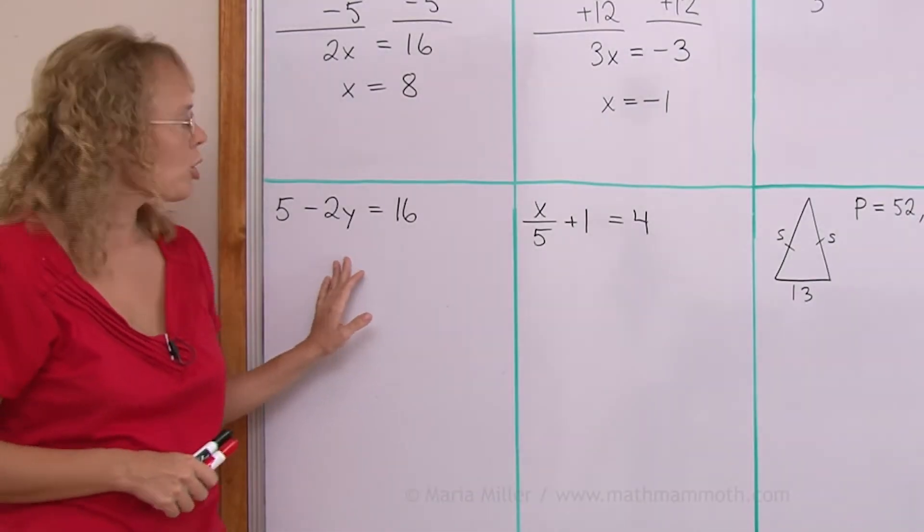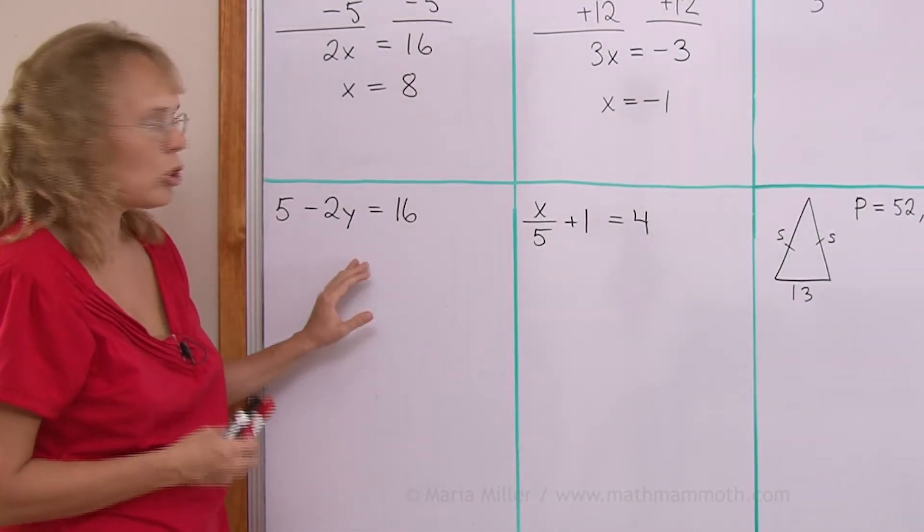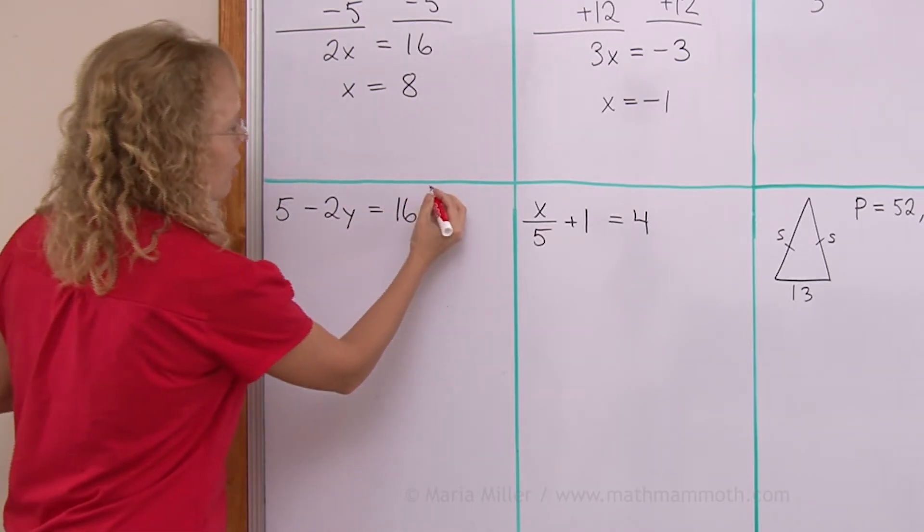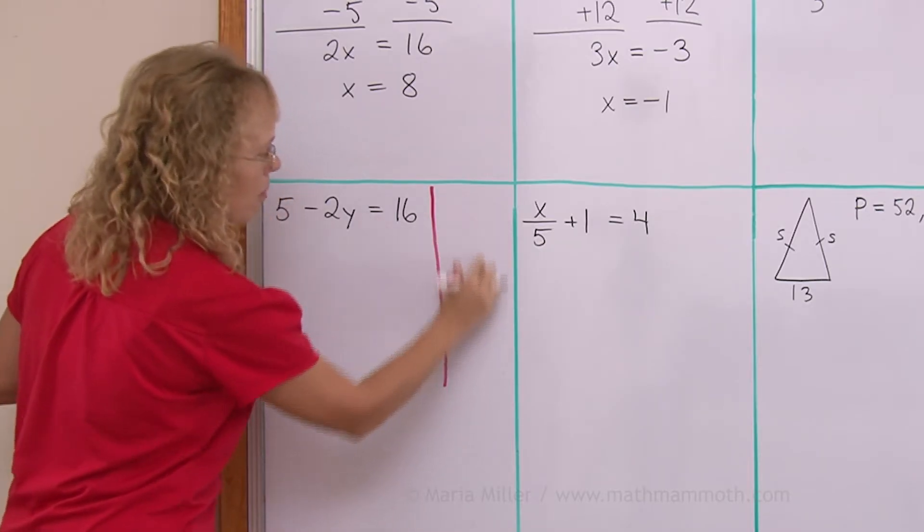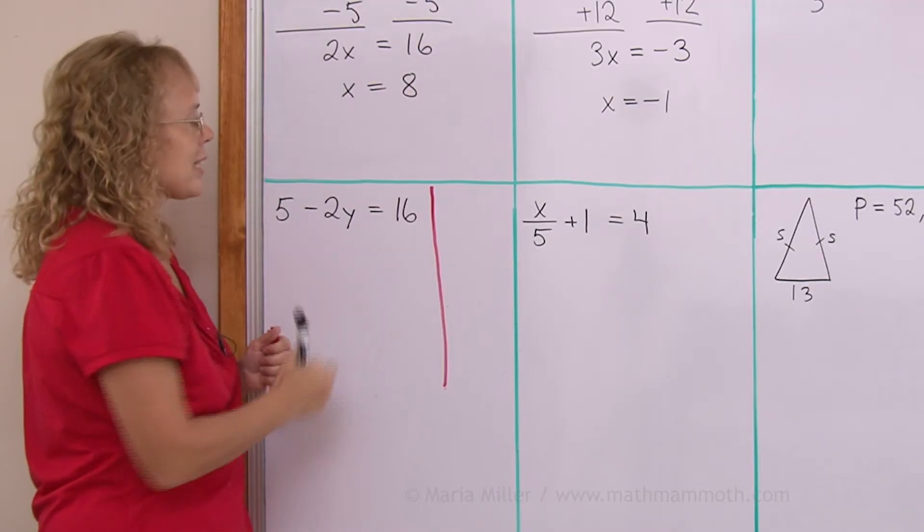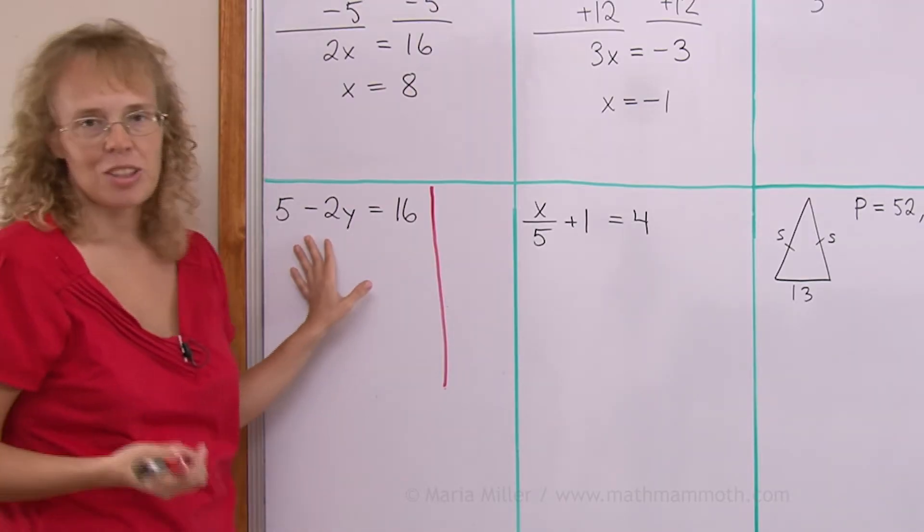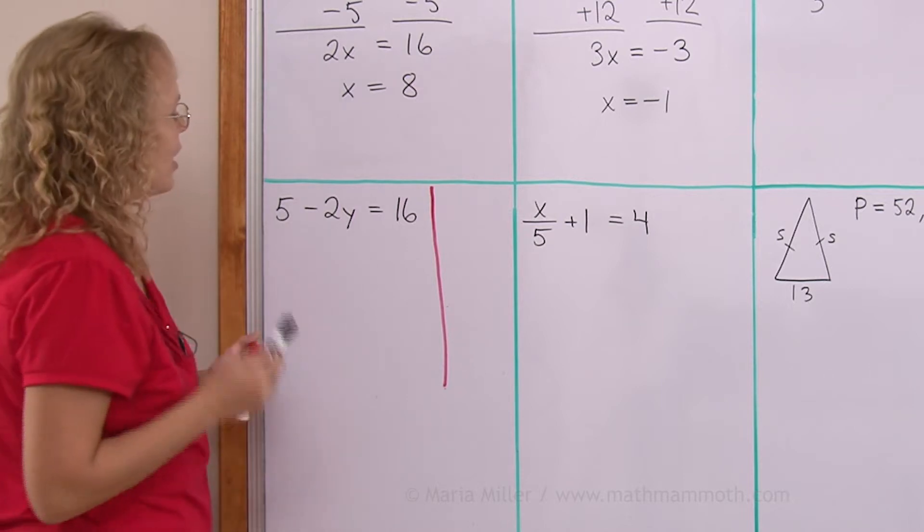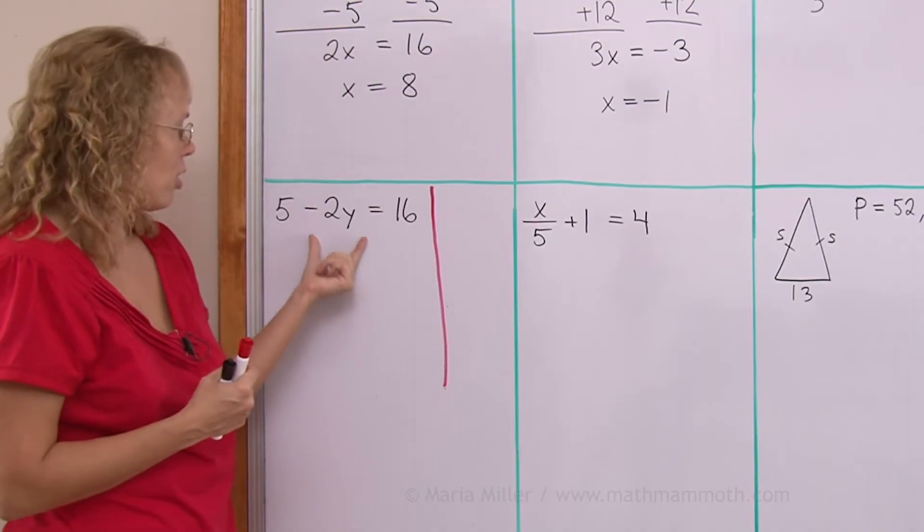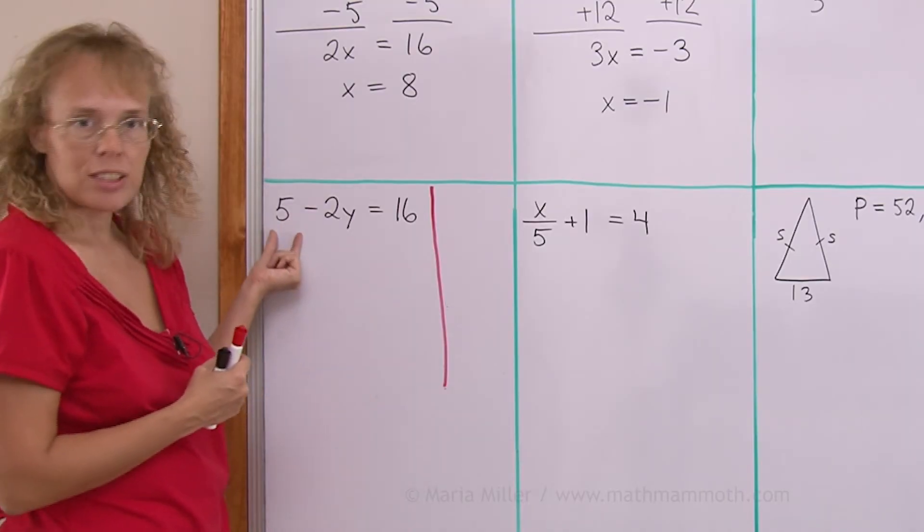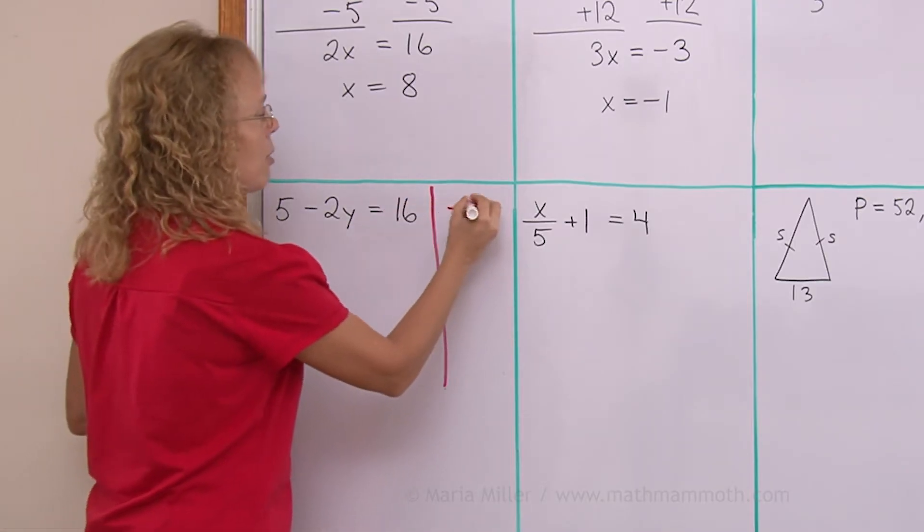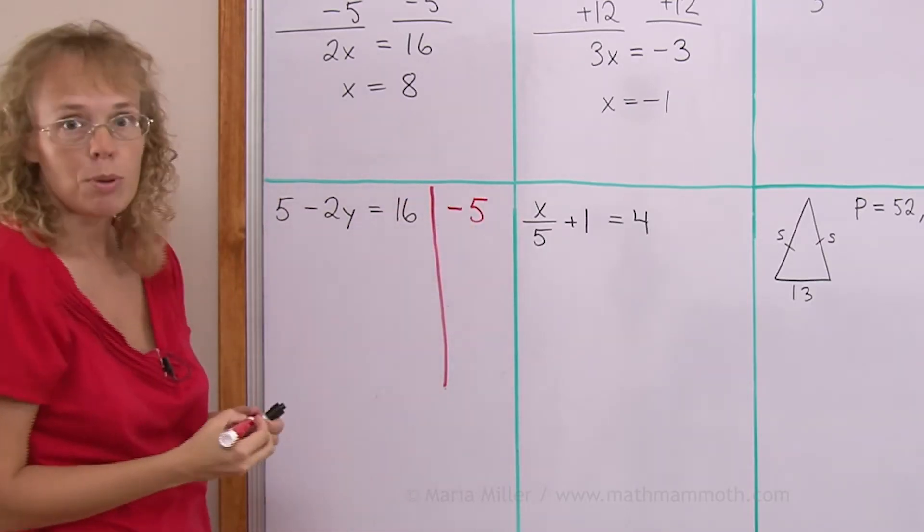With this equation I will show you a way to note what you're gonna do to the equation here in the margin so to speak. So I'm gonna draw here a line. And then this is my marginal note. 5 minus 2y equals 16. Again there's actually several ways you can start solving this. The way I'm gonna do it now is I want to have y or the term with y here alone on this side. So I'll get rid of this 5. That means I will subtract 5 from both sides. As I'm gonna mark it here this means subtract 5 from both sides.